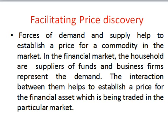Let's take an example. When Kingfisher was number one, its face value was 10 rupees but its market price went up to 1,200, 1,300, even 1,500 rupees. But when its price came down to 2 rupees, the forces of demand and supply established that price. In the financial market, households are the supply of funds and business firms represent the demand. Their interaction helps establish a price for the financial asset being traded.